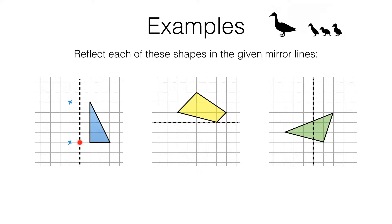So it's going to be reflected three squares away on the left side of it. Now all we have to do is join up the points with a ruler, and there we have the reflected shape. The reflected shape has a special name — it's called the image.